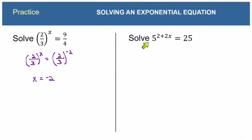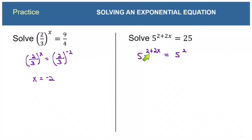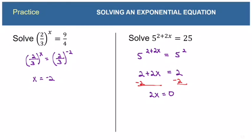Now: 5^(2+2x) = 25. I know 25 = 5^2, so I write 5^(2+2x) = 5^2. Since the bases are the same, the exponents must be equal: 2 + 2x = 2. Subtracting 2 from both sides gives 2x = 0, so x = 0. And checking: 2 + 2(0) = 2, and 5^2 = 25. It works.